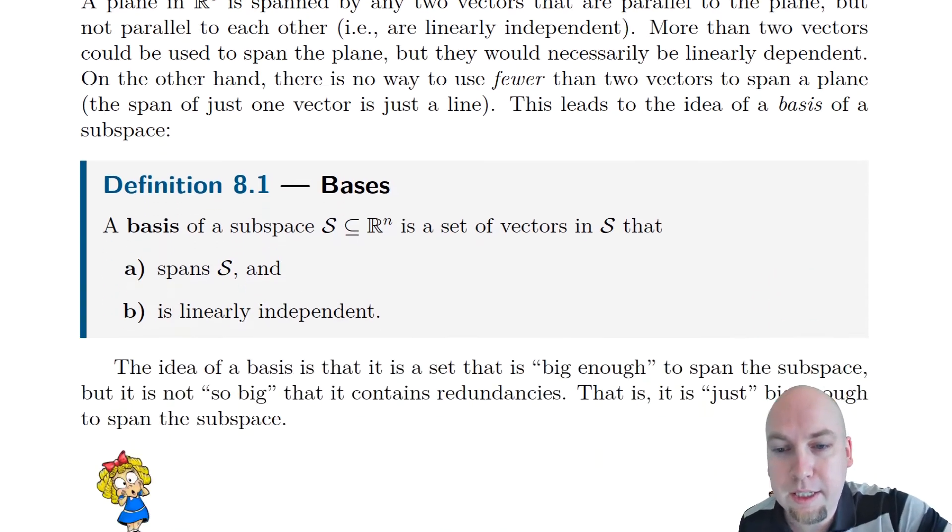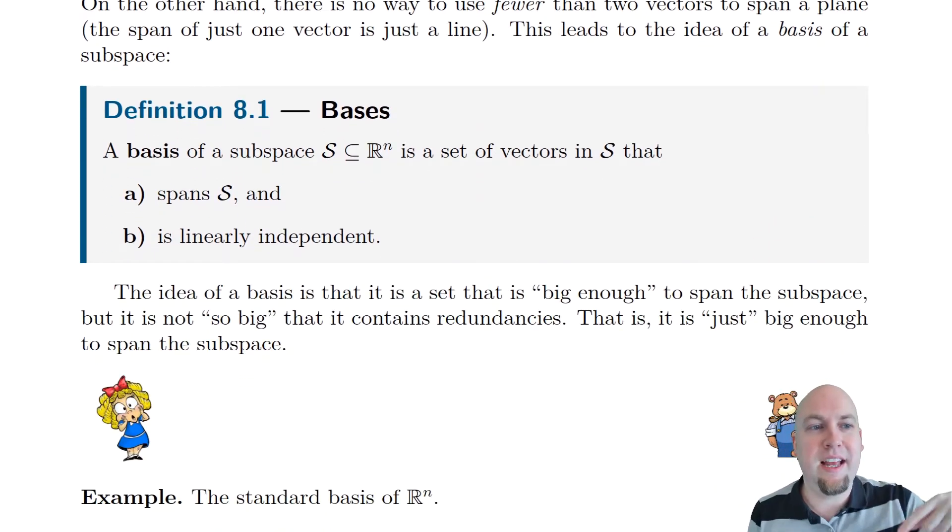A basis of a subspace is any set of vectors that has these two properties. First, it's got to span the entire subspace. In other words, you have to be able to write everything in S as a linear combination of the members of the basis. And property B, the other property you need, is this basis has got to be linearly independent. Remember the idea there: that means there's no redundancies in this set. There's nothing that you can toss away from the set while retaining its span.